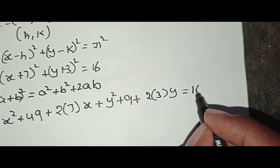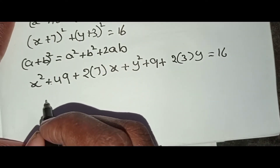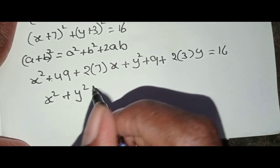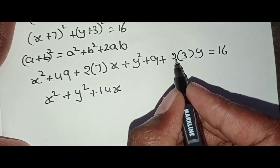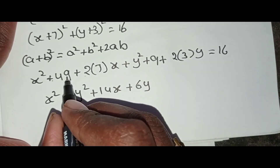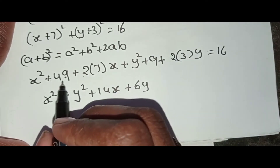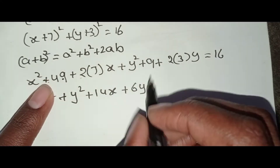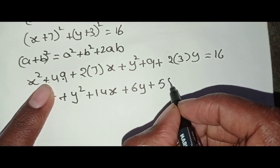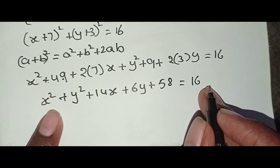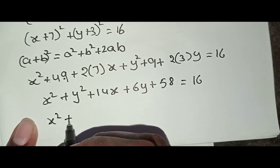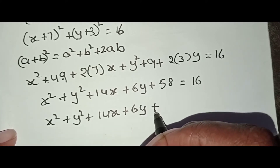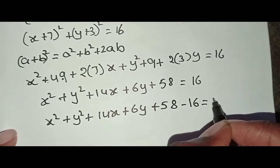Combining the terms: x² + y² + 14x + 6y + 49 + 9 = 16. That gives 49 + 9 = 58, so x² + y² + 14x + 6y + 58 = 16. Rearranging: x² + y² + 14x + 6y + 42 = 0.